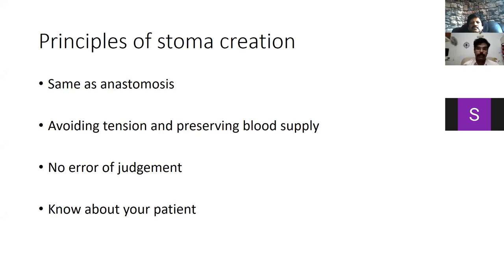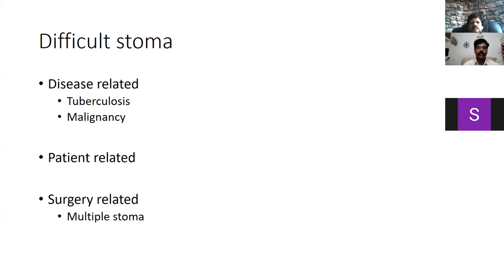It is very vital, especially in a difficult stoma, that the surgeon knows about the patient comprehensively — starting from body habitus, the number of previous surgeries, the disease process, and also the social support system. Difficult stoma creation can be related to three things: disease-related factors, patient-related factors, and sometimes surgery-related factors, including patients with multiple surgeries and scars.